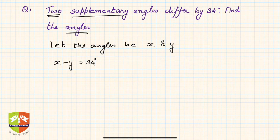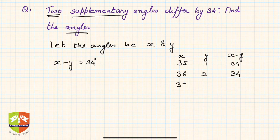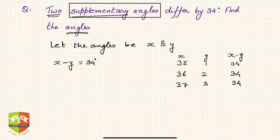There could be lots of possibilities. X is 35 and y is 1, so x minus y will be 34. Or 36 and 2, this is also 34, or 37 and 3. So which one will you take up? Obviously there is one more information: the angles are supplementary. So supplementary means x plus y is 180 degrees. Now 35 plus 1 is 36, this is 38, this is 40, so none of them are working.